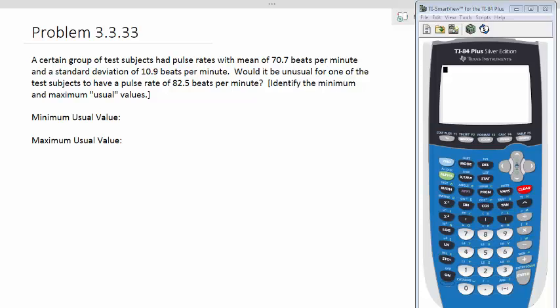This is from section 3.3, a problem similar to your homework assignment. It says here a certain group of test subjects had pulse rates with a mean of 70.7 beats per minute.